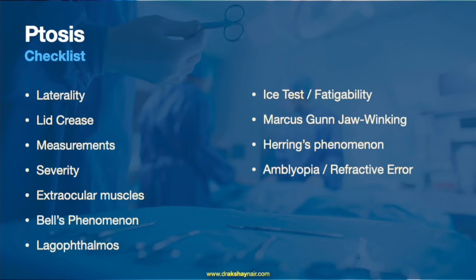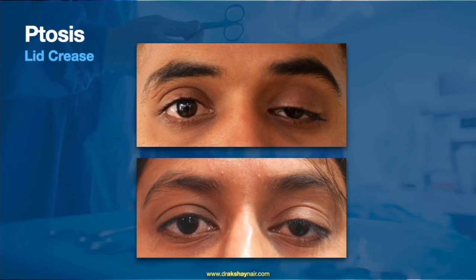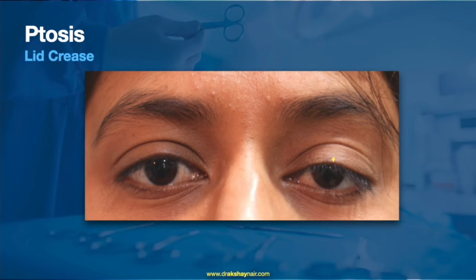One of the first things to be seen is the lid crease. In patients with congenital ptosis, typically a lid crease is absent or a faint lid crease is seen. Patients with acquired ptosis usually have a well-formed eyelid crease. This crease is an extremely important surface marking. The distance from the highest point on the upper eyelid to the first most prominent lid fold is known as the margin crease distance or lid crease distance — about 6-8 mm in men and 9-11 mm in women.